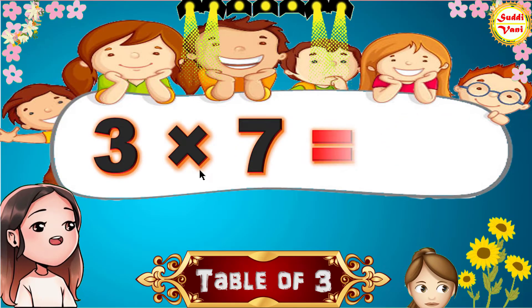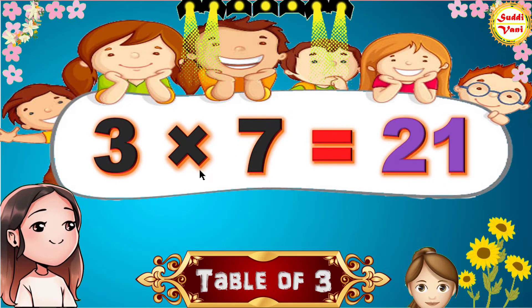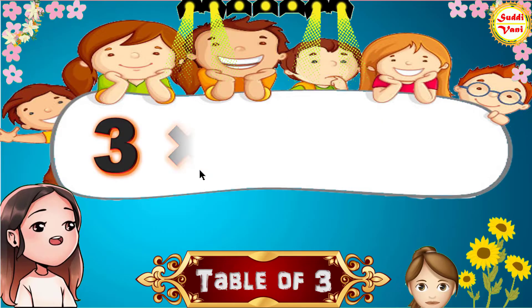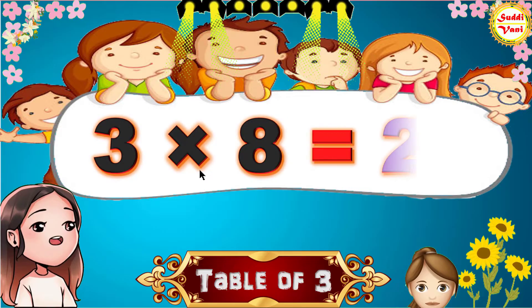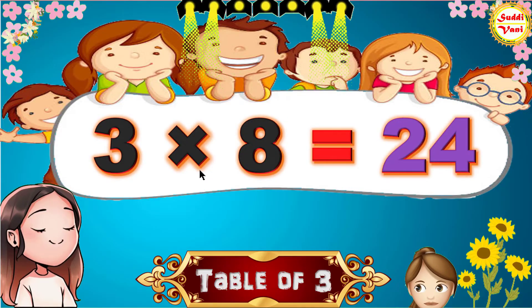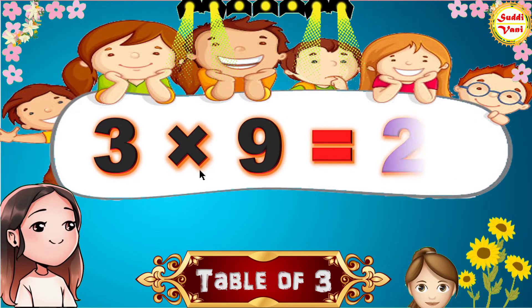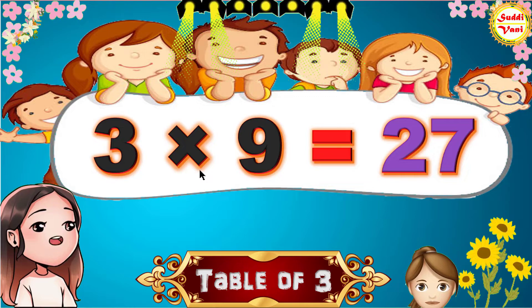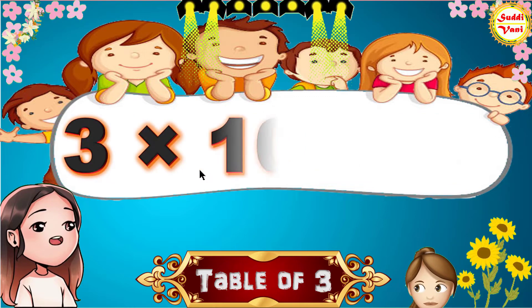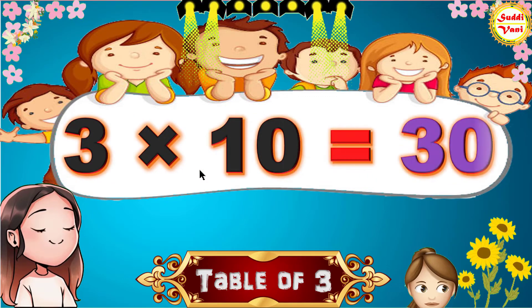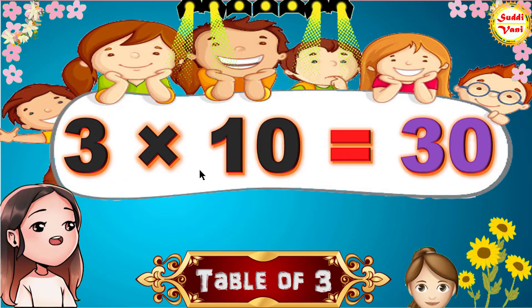3 7s are 21, 3 8s are 24, 3 9s are 27, 3 10s are 30.